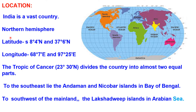The latitudinal extent of India is 8 degrees 4 minutes north and 37 degrees 6 minutes north. When writing the latitudinal extent, do not forget to write 'north' because India is in the northern hemisphere. The longitudinal extent is 68 degrees 7 minutes east and 97 degrees 25 minutes east. Since India is in the north-eastern hemisphere, 'east' appears in the longitudinal extent.